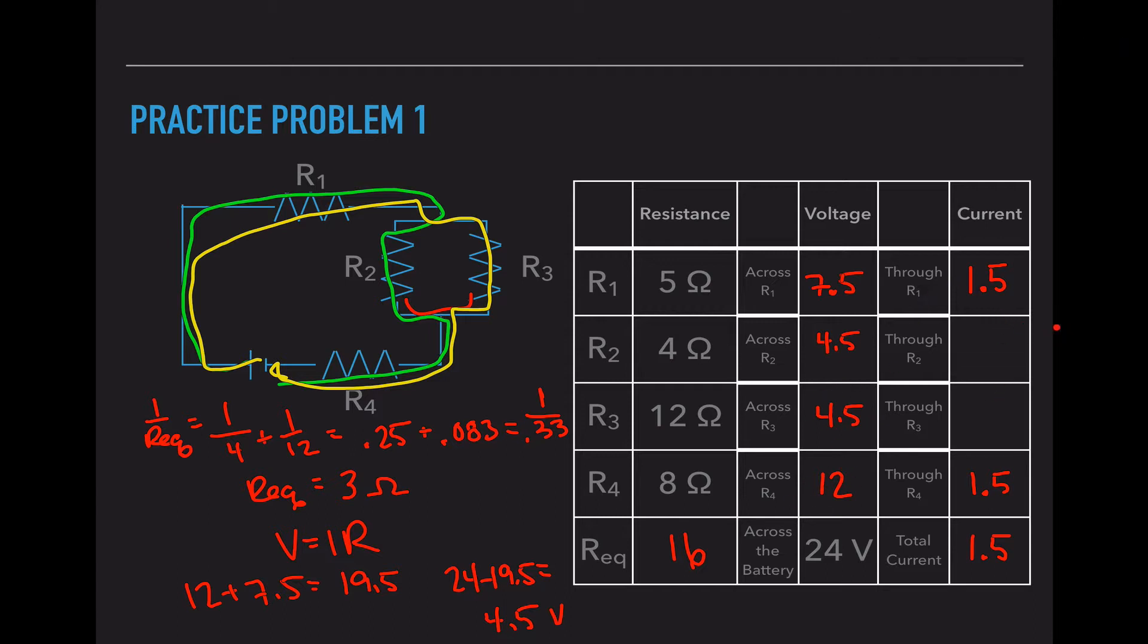Now I can go back and solve for the current. But I'm just going to make a guess here. Since my resistance for R2 is 4, and my resistance for R3 is 12, I think more of my current should be traveling through R2. More electrons are going to choose the easy path. So I'm going to take V, 4.5, and divide by 4. That's a value of 1.125. Now I'm going to take a value of 4.5 and divide it by 12, and that is a value of 0.375. These two numbers added up should equal our total current.